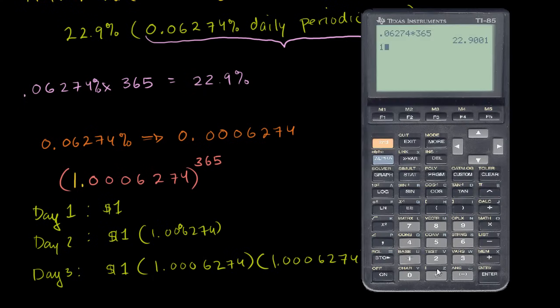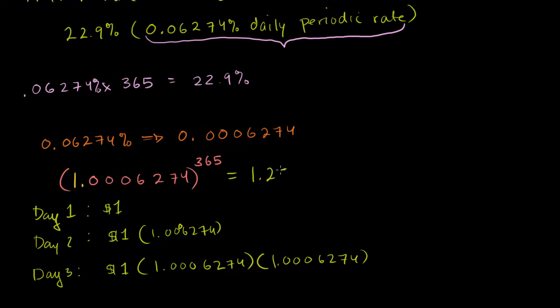So if I take 1.0006274 and I raise it to the 365th power, I get 1.257. So if I were to compound this much interest, 0.06% for 365 days, at the end of a year, I would owe 1.257 times my original principal amount.